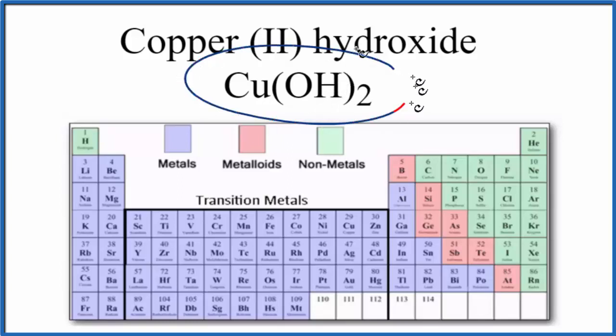The short answer is that the whole compound is an ionic compound, but within it we have this hydroxide polyatomic ion. We actually have two of them. And the bond between the oxygen and the hydrogen, that's a covalent bond.